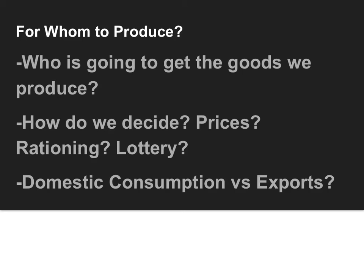And then lastly, how are we going to decide for whom to produce? Who's going to get the goods that society produces? Do we use prices in the market system and allow supply and demand to figure out who gets what? Are we going to use a rationing method so people can only have a few of each? Or are we going to use a lottery system in terms of who's going to get the goods that we've produced? As well as the decision of are we going to consume it domestically, or are we going to export some to foreign countries? In each society, we have to decide on those actions of for whom to produce.